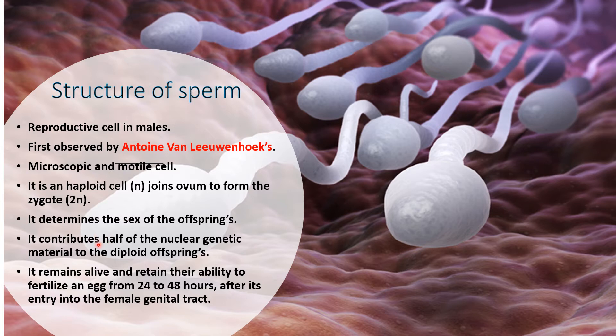Sperms contribute half of the nucleogenetic material to the diploid offspring. Half of the genetic material comes from the sperms and the remaining half comes from the ovum. Sperms remain alive and retain their ability to fertilize an egg for 24 to 48 hours after entry into the female genital tract.